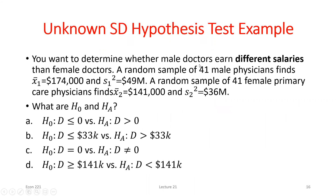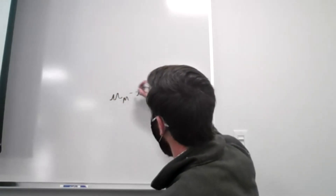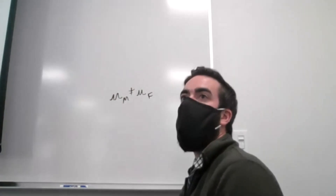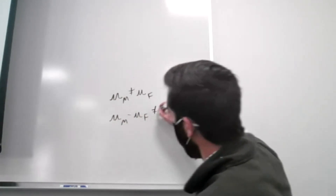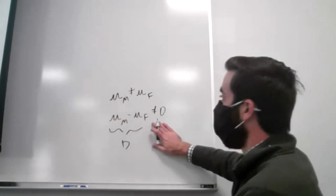Let's work through an example. Let's assume we want to determine whether or not male doctors earn different salaries than female doctors — some kind of wage gap identification. We take two samples: 41 male and 41 female physicians. We have two different sample means for those groups and then we find the sample variances. If we want to test whether these salaries are different, we're asking whether the mean male salary is anything other than the mean female salary.